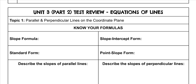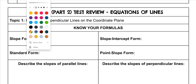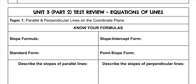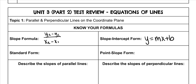Today we're going to go over your Unit 3 Part 2 test review, which is equations of lines. It starts off with all of your formulas. The slope formula is y2 minus y1 over x2 minus x1. Your slope-intercept form is y equals mx plus b. Remember that m is your slope and b is your y-intercept.